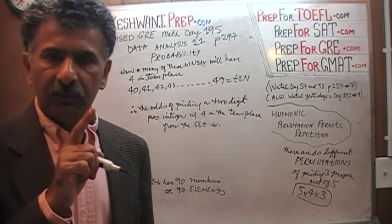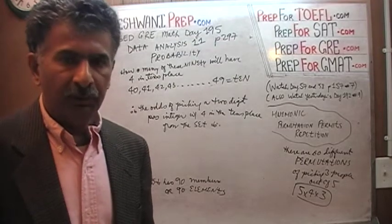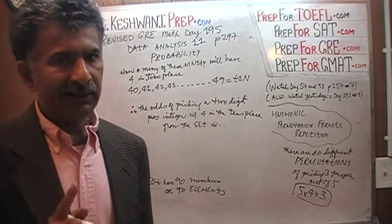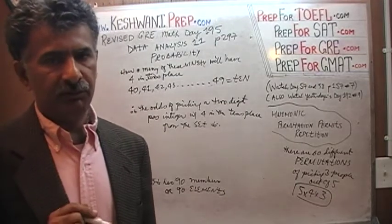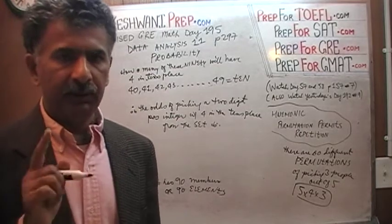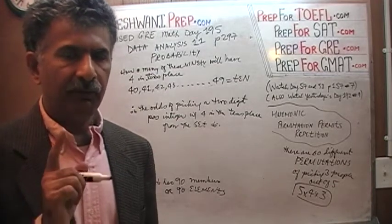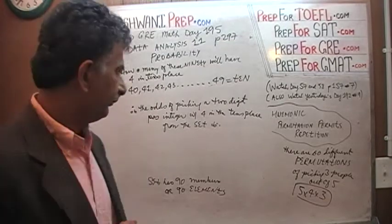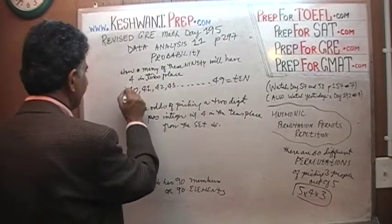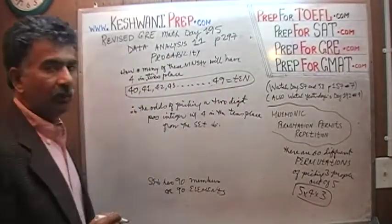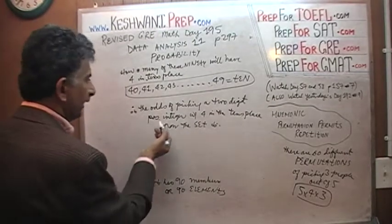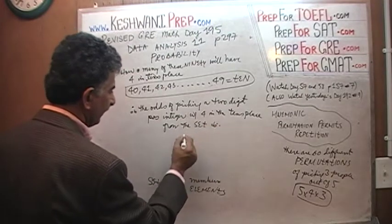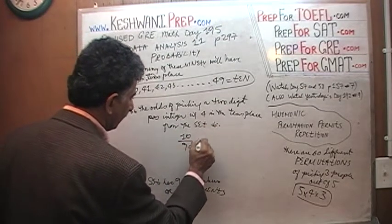As we explained before, 1 through 99 are 99 integers, of which 1 through 9 are just one-digit integers. Therefore, there are 90 positive two-digit integers — we say positive because we are not counting the negatives. That's our set, with 90 elements or 90 members, of which 10 of them have four in the tens place. Therefore, the odds of picking a two-digit positive integer with four in the tens place from the set is simply 10 out of 90, or one-ninth.